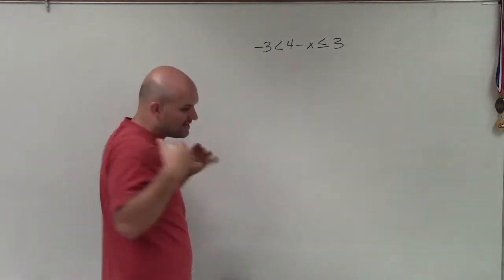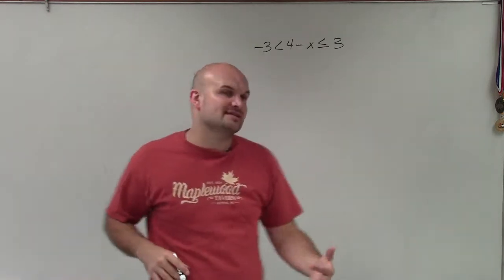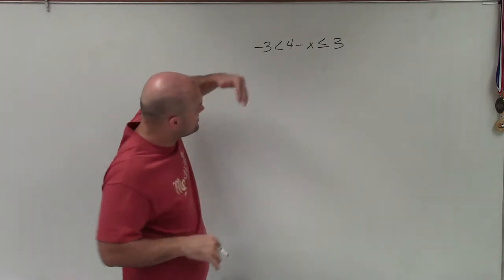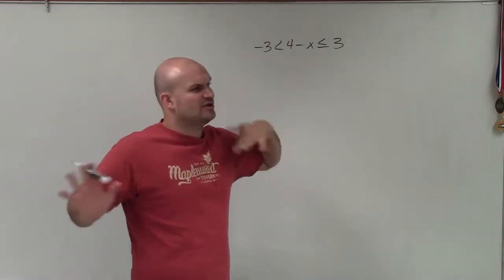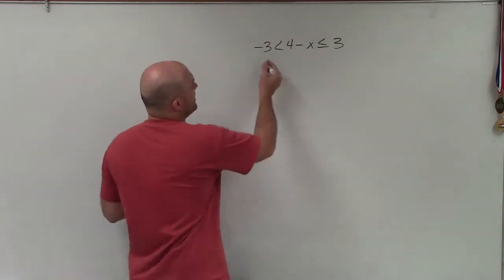So the first thing we need to do is understand, well, what is happening to the variable? And this one gets a lot of students because what's happening to the variable is being multiplied by -1. It's being added by 4. And a lot of students say, well, no, that's not what's happening. But let's look at it a different way.